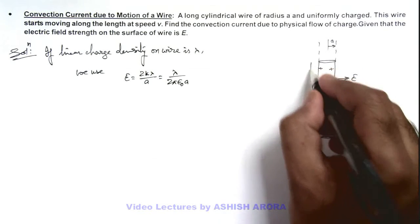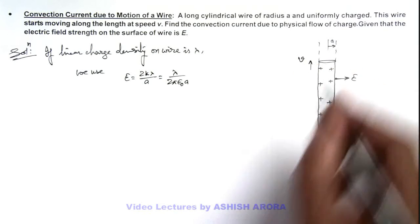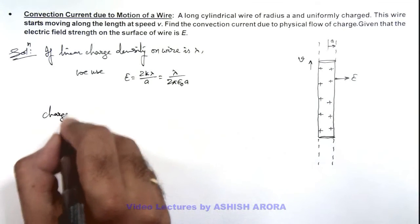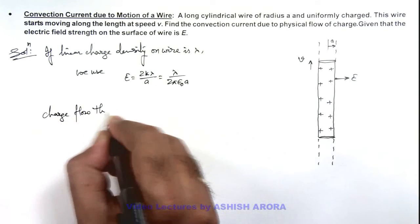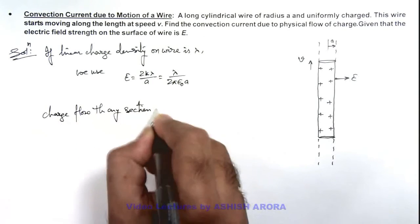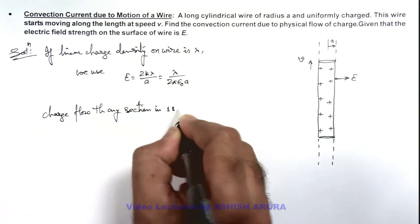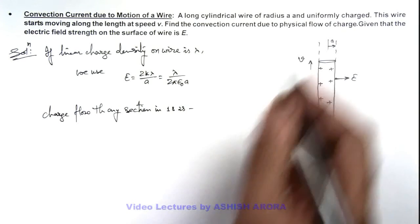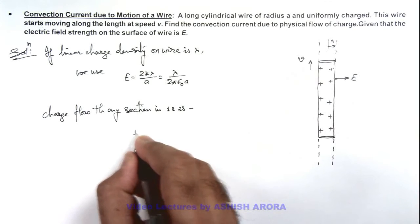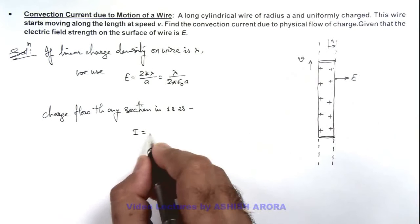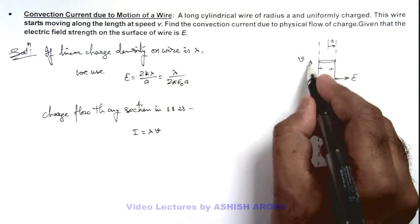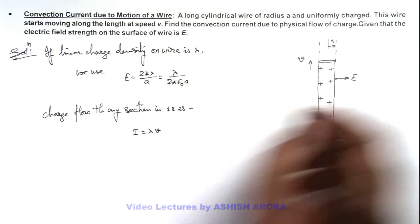And if the wire is moving at speed v, then we can directly write the amount of charge flow through any section in 1 second. The amount of charge flow through any section in 1 second we can write as current, and the value of current in this situation will be λv, because in 1 second it will travel a distance v meters and charge per unit length is λ.